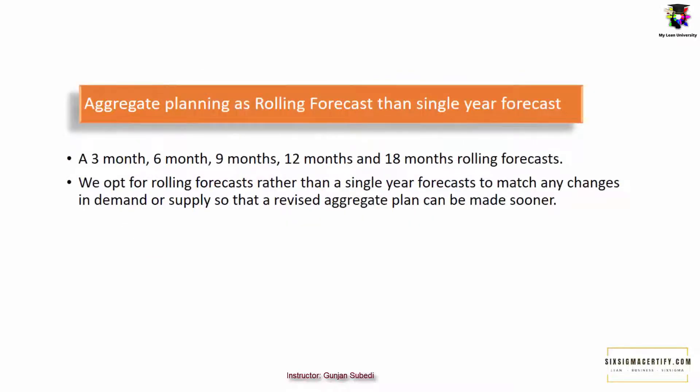Aggregate planning is usually a 3-month, 6-month, 9-month, 12-month, or 18-month rolling forecast. We go for a rolling forecast rather than a single-year forecast to match any changes in demand or supply, so that a revised aggregate plan can be made sooner.